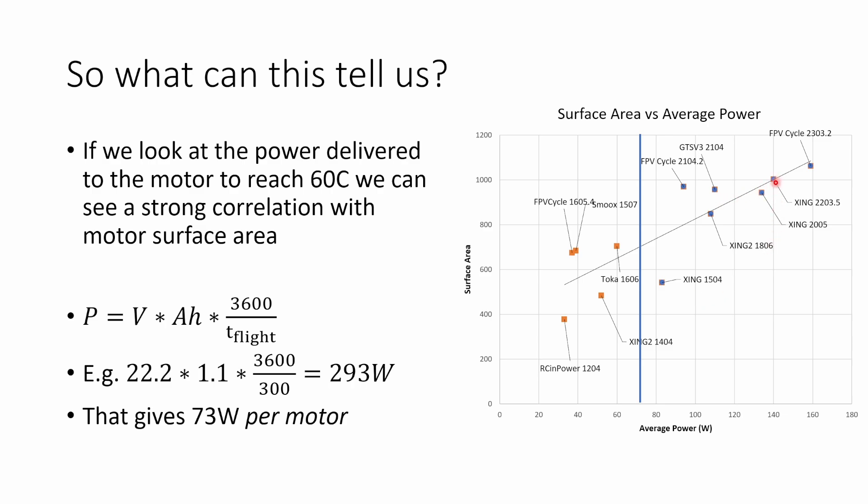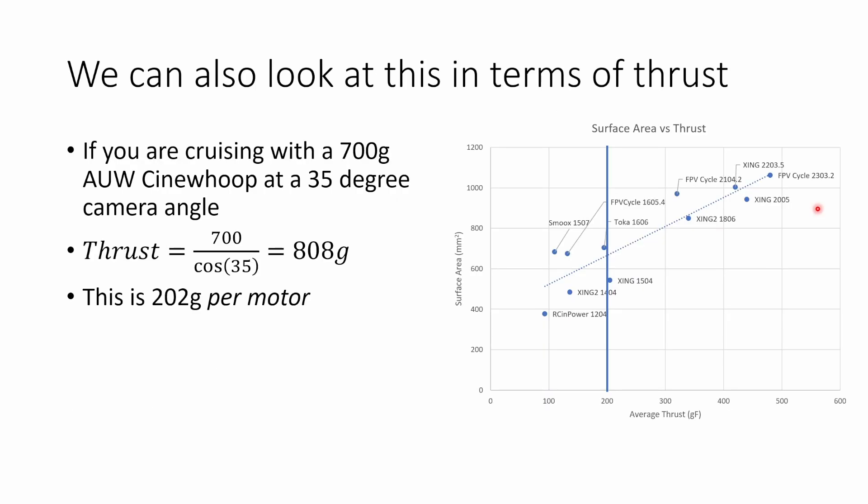You can see that these motors that can dissipate much more power, 135, 140, 160, these are potentially over-specified for what we need. They have more surface area than we need, and we're going to talk later about why you might not want to pick a motor with much more surface area than you need. But what if you don't know what the average power that you're going to be delivering into your motors is? Perhaps you don't know what the flight time of your Cinewhoop is going to be on any particular battery.